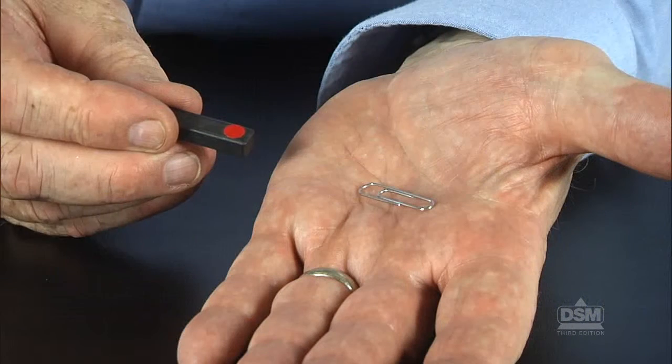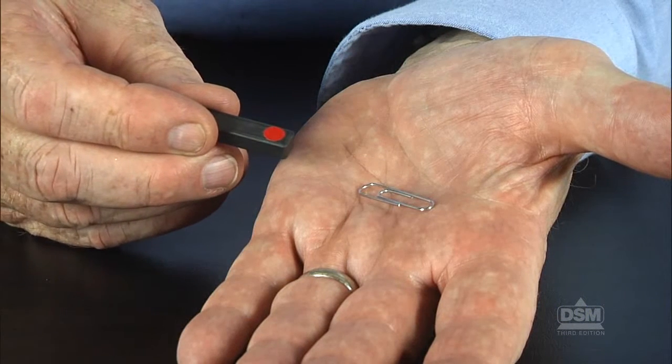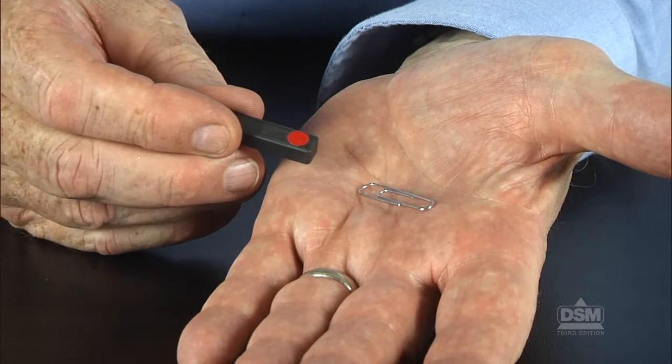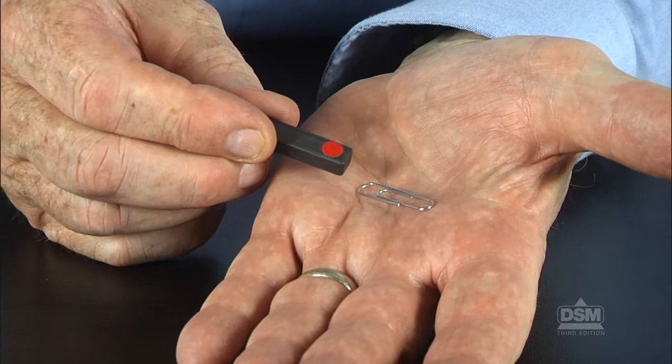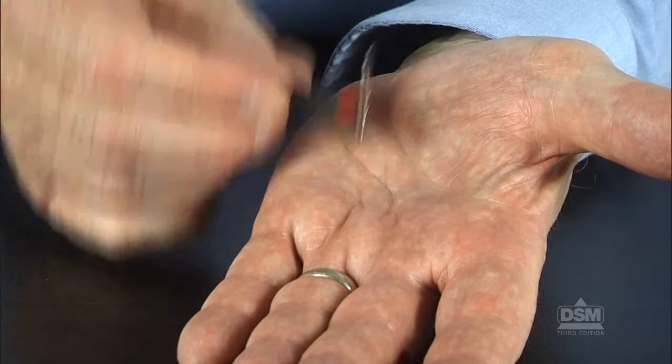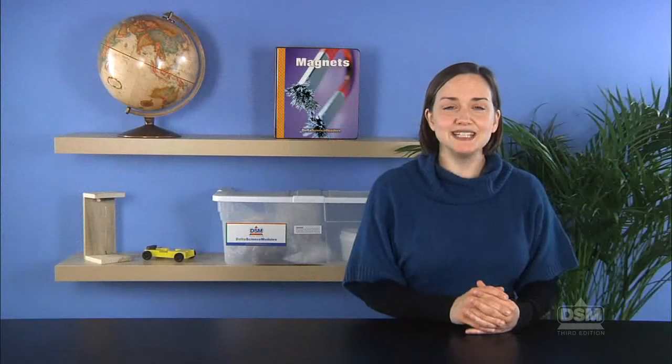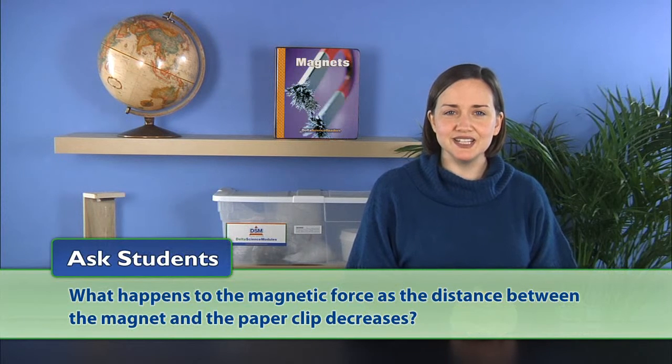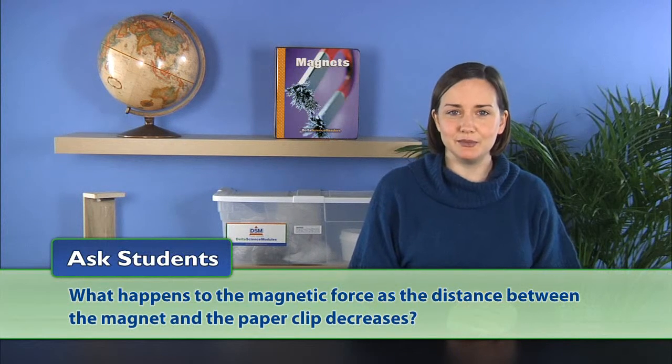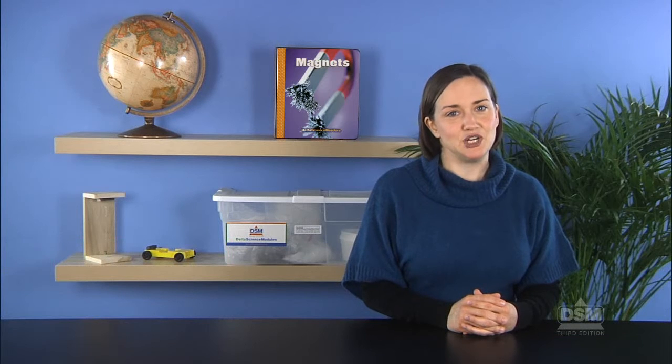Next, have a member in each team place a paperclip in the palm of one hand and hold the small magnet between the thumb and index finger of the other hand. Have him or her slowly move the magnet toward the paperclip until the clip begins to react to the magnet. Have the second team member perform the same procedure. Then ask students, what happens to the magnetic force as the distance between the magnet and the paperclip decreases? Explain that the magnetic force felt by the paperclip increases as the distance decreases.